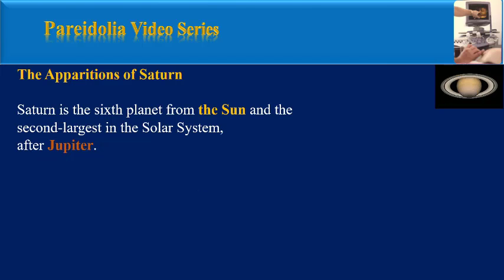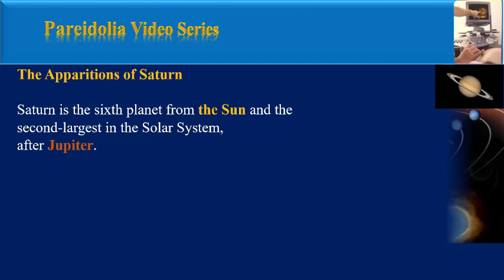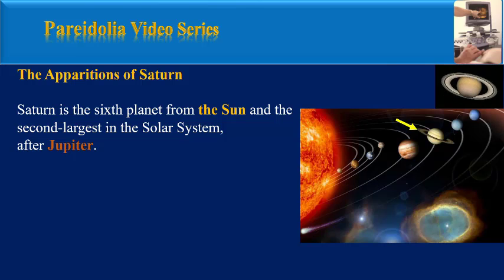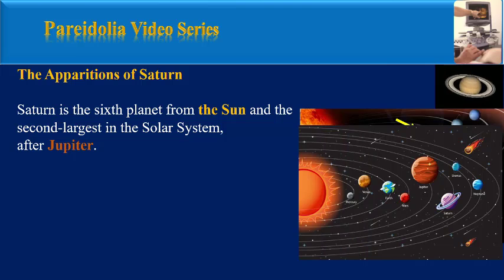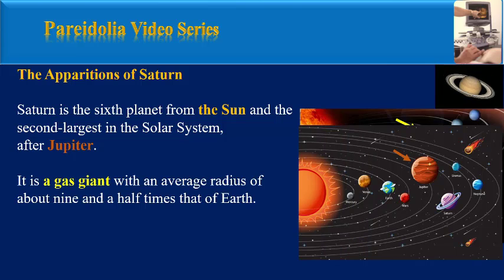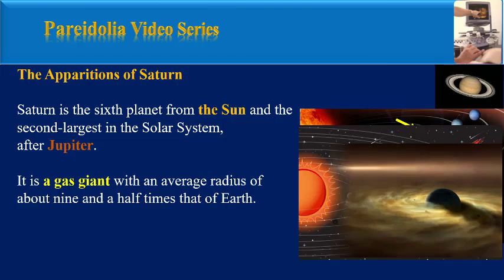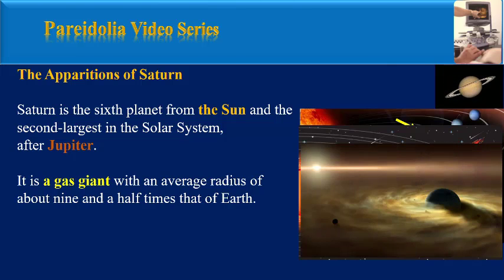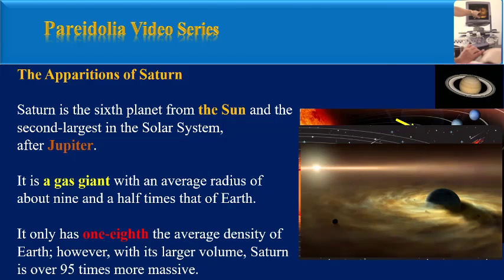Saturn is the sixth planet from the Sun and the second largest in the solar system after Jupiter. It is a gas giant with an average radius of about nine and a half times that of Earth. It only has one eighth the average density of Earth.